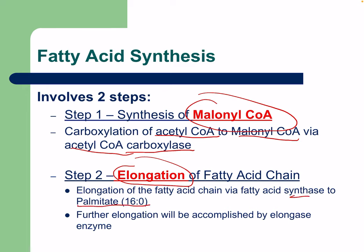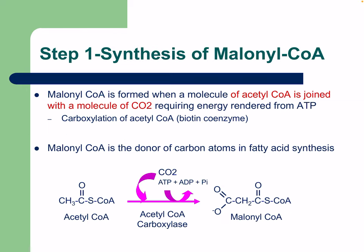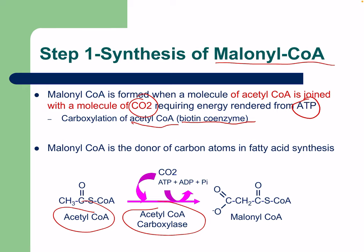Fatty acid synthase elongates the chain to a 16-carbon palmitate or palmitic acid. Further elongation is accomplished by the elongase enzyme. In step one, malonyl-CoA is formed when acetyl-CoA is joined with CO2, requiring energy from ATP. The carboxylation of acetyl-CoA uses the biotin-containing acetyl-CoA carboxylase enzyme. Malonyl-CoA is the donor of carbon atoms in fatty acid synthesis.